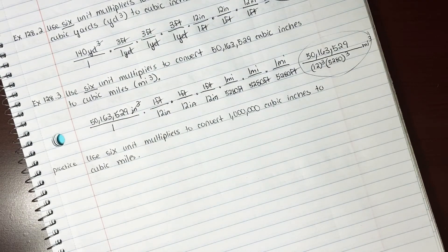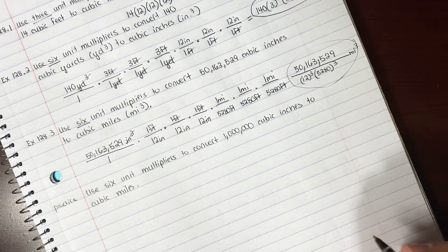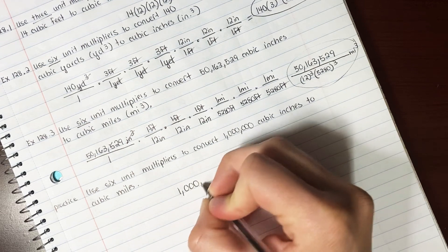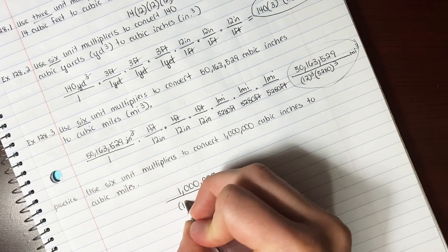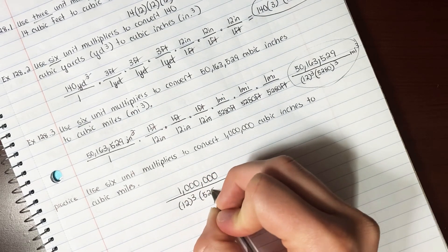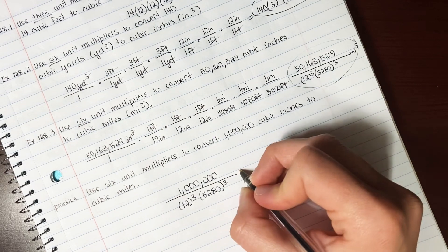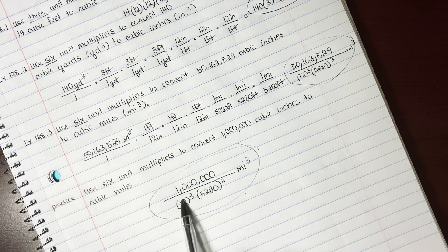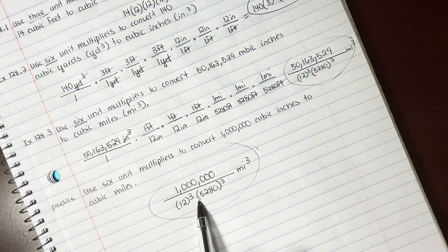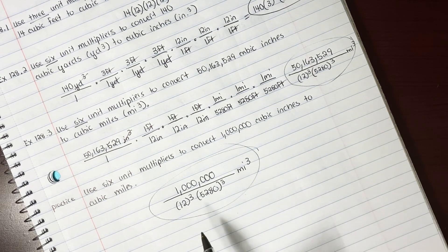Go ahead and do the practice problem, and then play the video and see if you got it right. So if you did this correctly, you should end up with 1,000,000 on the top. And then on the bottom, 12 cubed times 5,280 cubed miles cubed. So again, you don't have to do these out. You can just write them out with their numbers without getting the final product. Make sure you have the correct units. That's lesson 128.